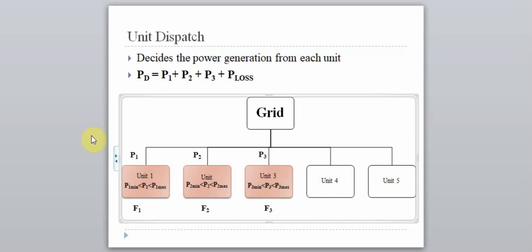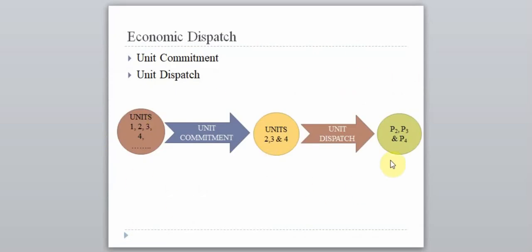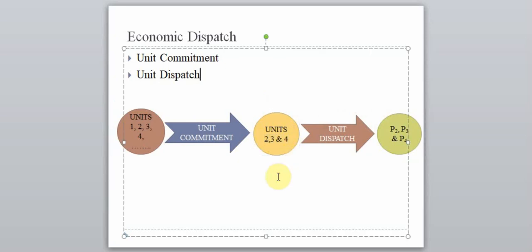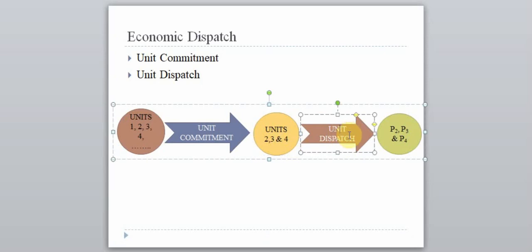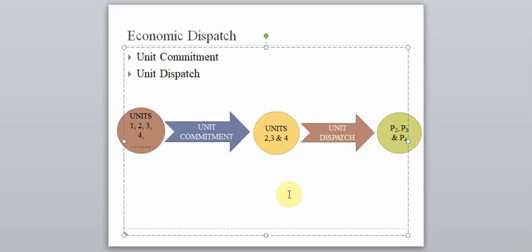Coming back to the summary slide: you have N number of units. After unit commitment, for a given period you select which units are to be scheduled and which are to be turned off. After unit dispatch, using an optimization problem, you select the values of power generated by each unit. This is the overall economic dispatch process.